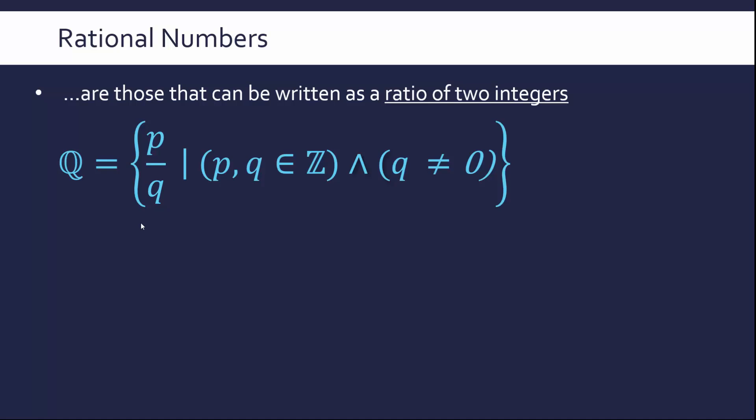This set comprehension is very confusing to look at. We can read it as saying all the numbers within this set are P divided by Q such that P and Q are elements of the integer numbers, and also Q can't be zero. If we have Q being zero, we have a divided by zero issue which is just undefined. So it can't be zero.